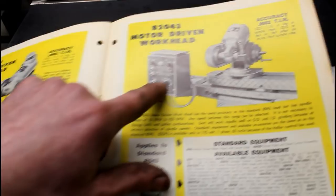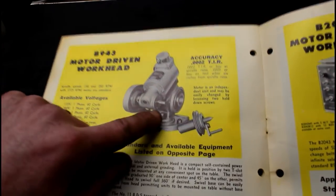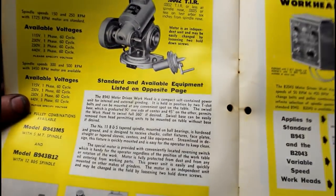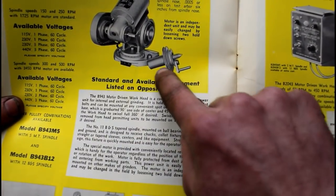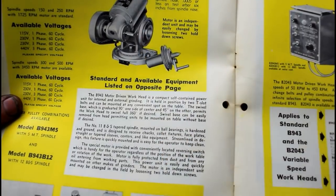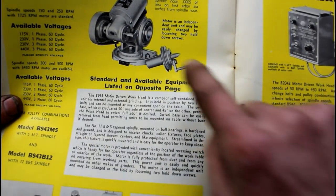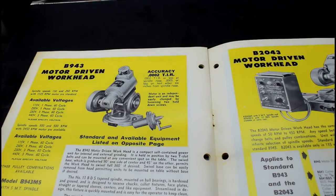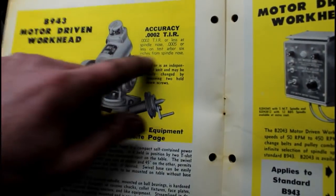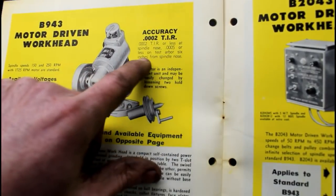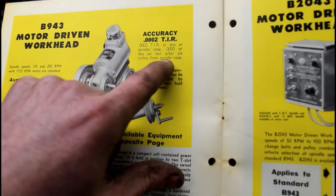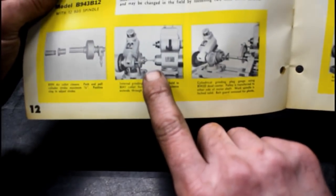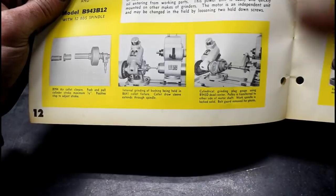Here's a speed controller, so if you wanted to control the speed of your head other than just changing the belts, you can actually get a fine control. This is the one that I have, just the B943 motor driven work head. And I actually, we've seen it if you've watched the earlier videos. I have this dog drive attachment and the 5C collet attachment for this. So it's saying that total runout is 2 tenths. So that's pretty good, that's not much runout. Or less at the spindle nose. Half a thousandth less test for arbor 6 inches from spindle nose. Wow, that's extremely accurate.